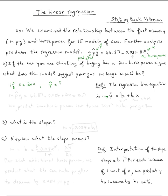So basically it's pretty easy. All you do is plug it in. So miles per gallon predicted would be equal to 46.87 minus 0.084 times 200. So if you use a calculator, you're supposed to get 30.07 miles per gallon.